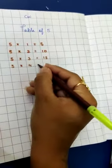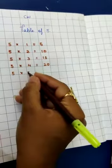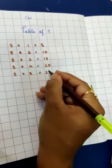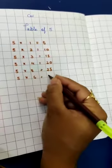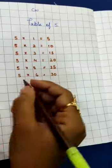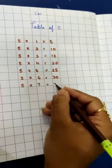5 4s are 20. 5 5s are 25. 5 6s are 30. 5 7s are 35.